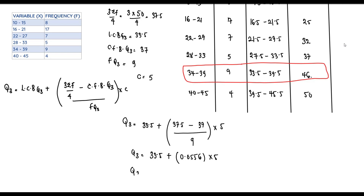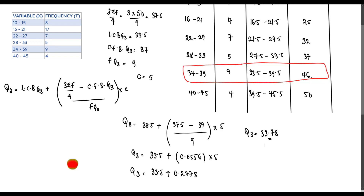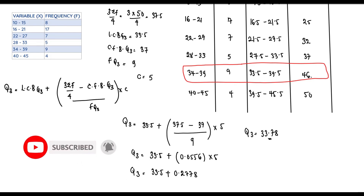Continuing: 0.0556 × 5 = 0.2778. Therefore Q3 = 33.5 + 0.2778 = 33.78, approximately to two decimal places. The value of the third quartile for this dataset is 33.78.